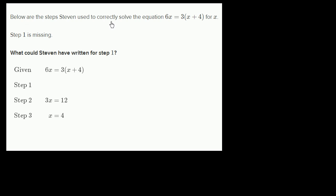Below are the steps Steven used to correctly solve the equation 6x equals 3 times x plus 4 for x. Step 1 is missing. What could Steven have written for step 1?